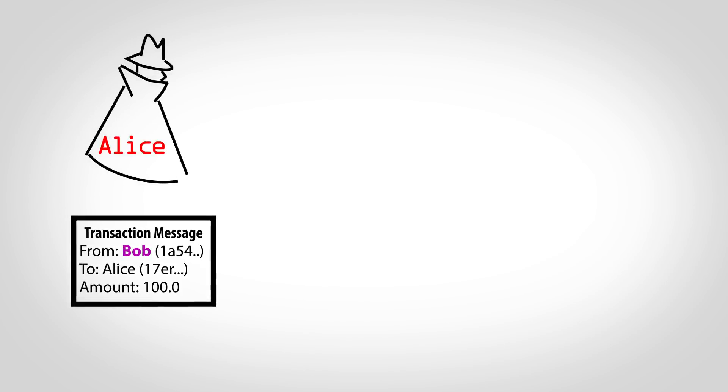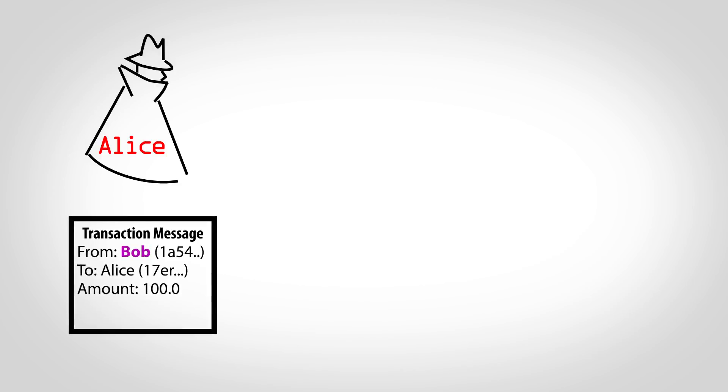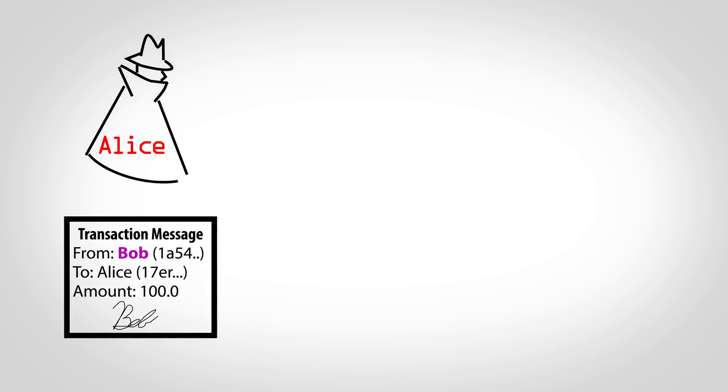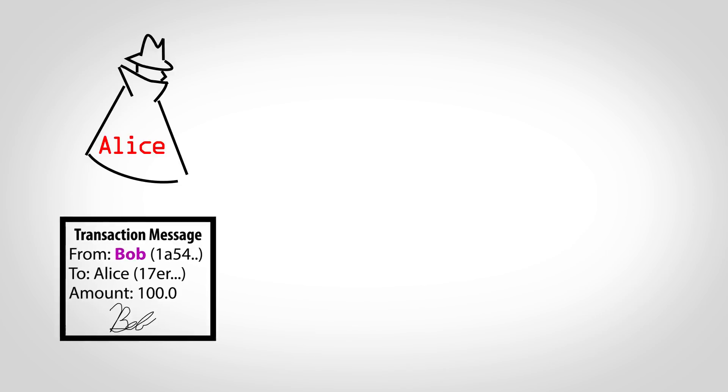If sending money is as simple as creating a message with some account numbers, what's to stop a thief, Alice, from spending Bob's money by using his account number? Like a pen and paper check, Bitcoin requires a kind of signature to prove that the sender is the real owner of an account, but is based on math rather than handwriting.